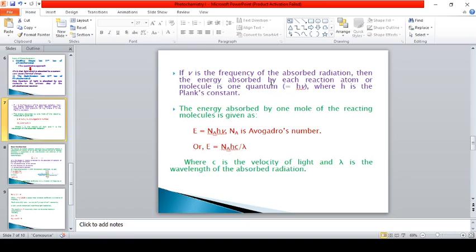If nu is the frequency of the absorbed radiation, then the energy absorbed by each reacting atom or molecule is one quantum, i.e. Hnu, where H is the Planck's constant. The energy absorbed by one mole of the reacting molecules is E equals Na times Hnu, where Na is Avogadro's number, or E equals Na times Hc by lambda, where C is the velocity of light and lambda is the wavelength of the absorbed radiation.